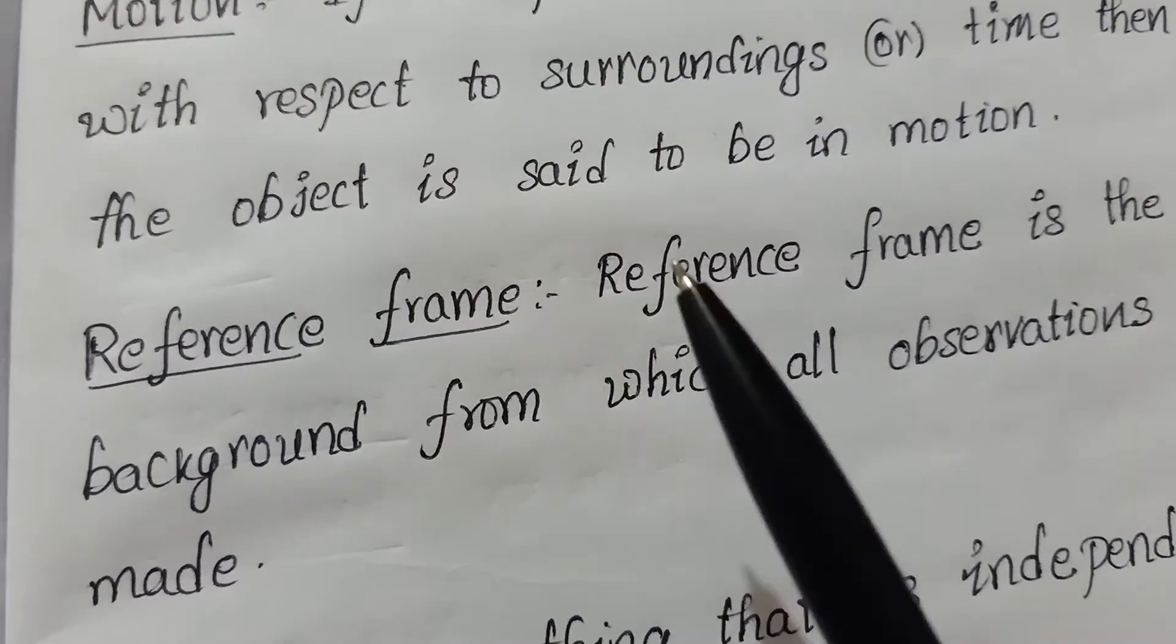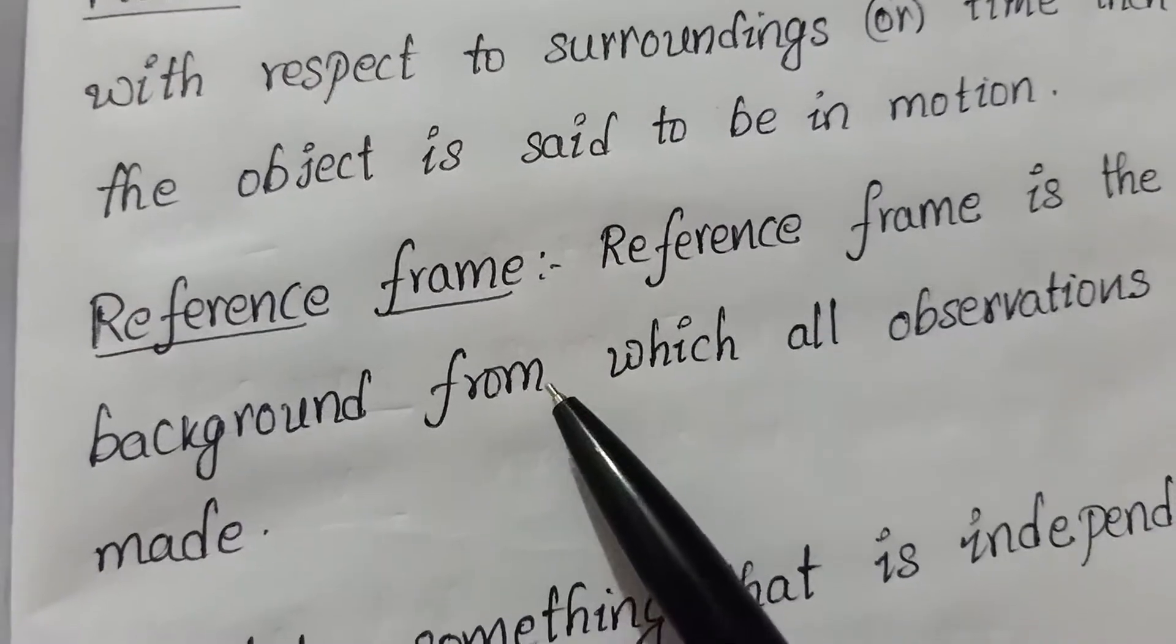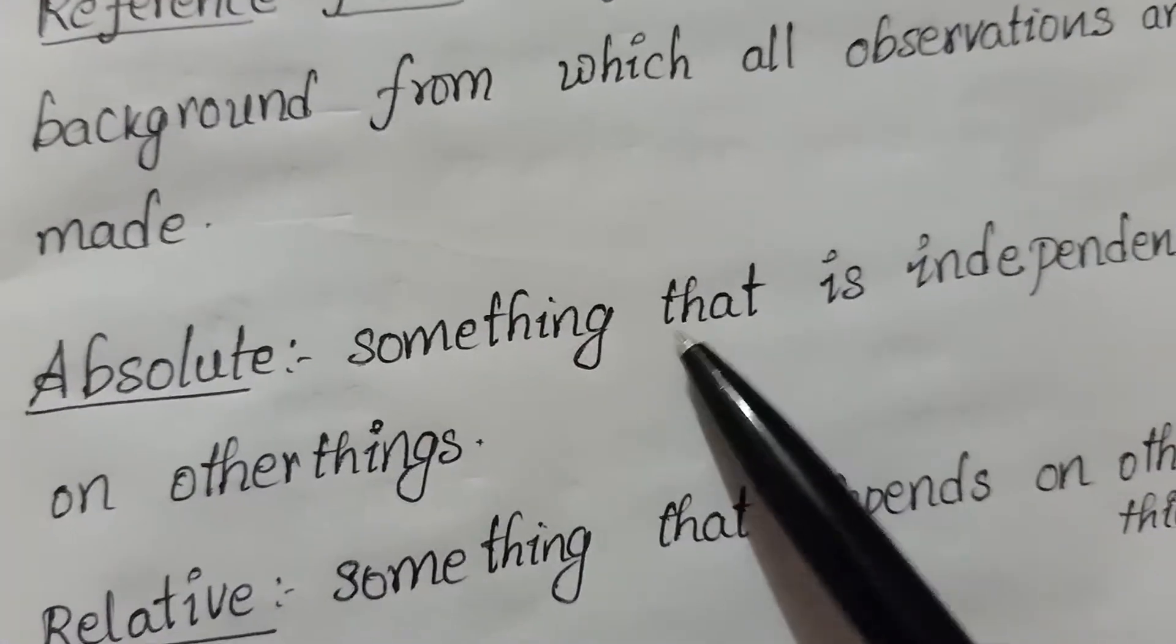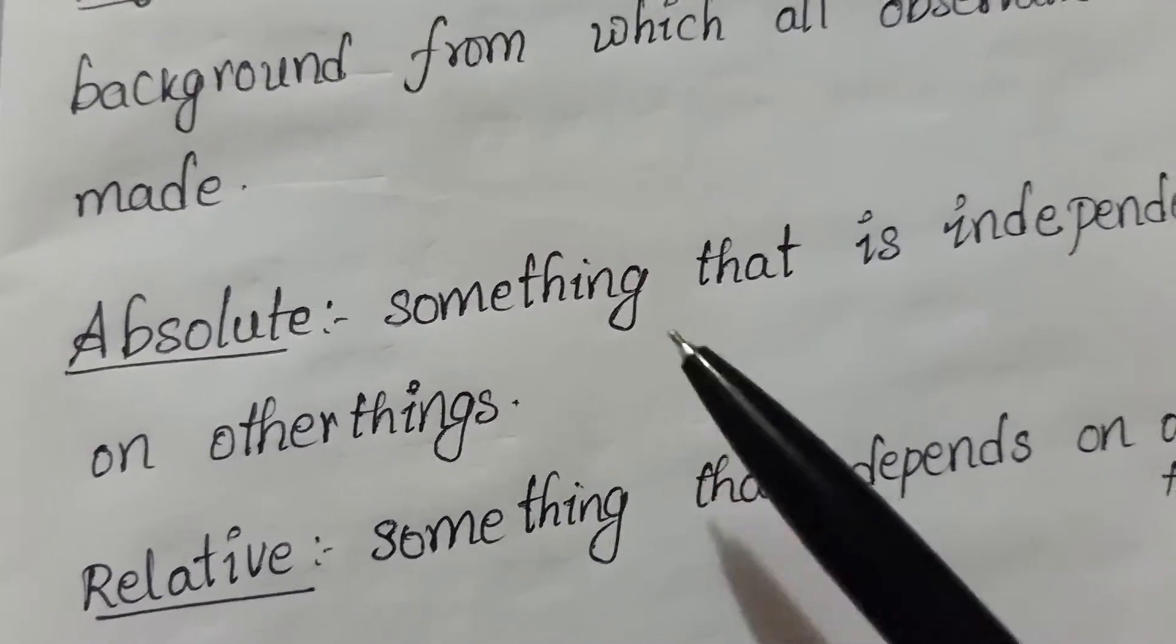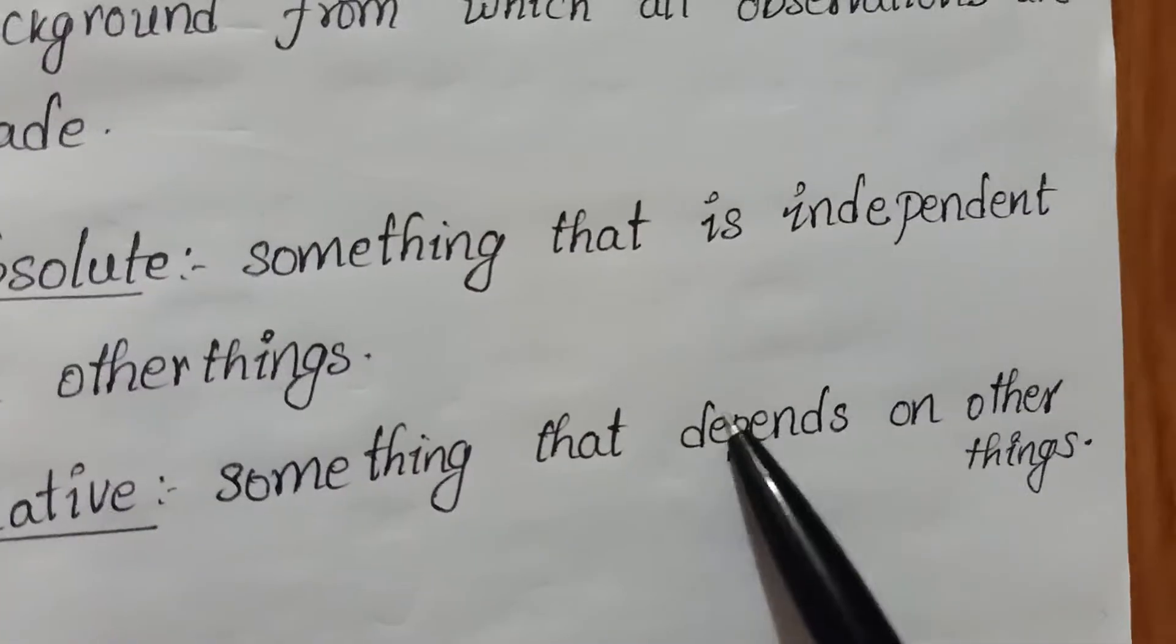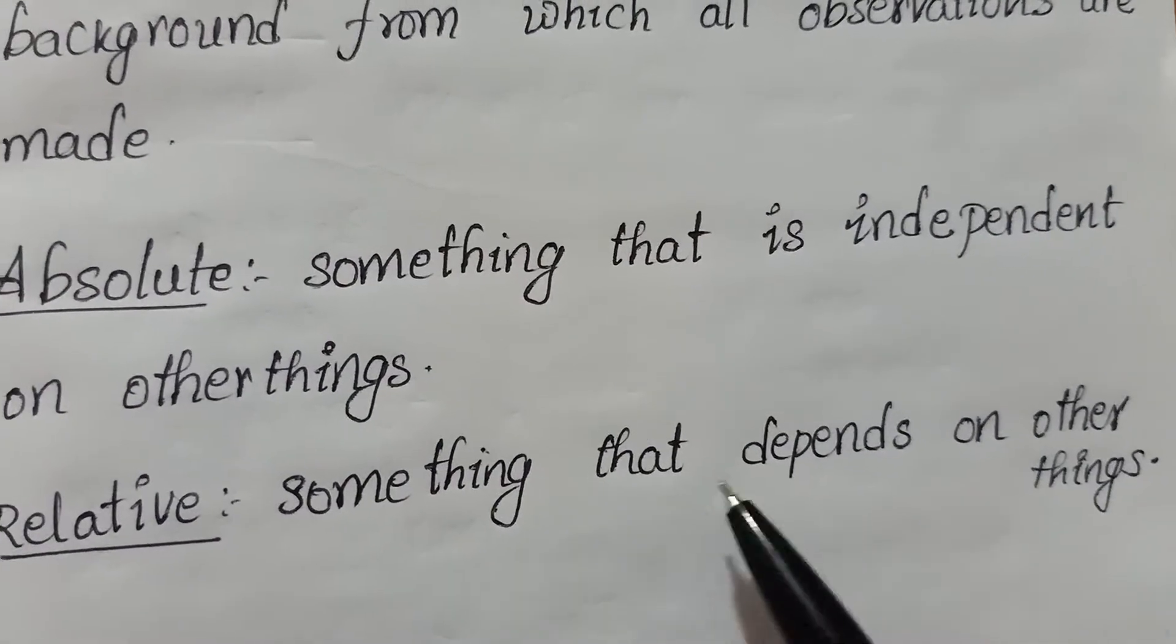In this reference frame, we will come across two things. Absolute: something that is independent of other things, it does not depend upon other things. Relative: something that depends upon other things.